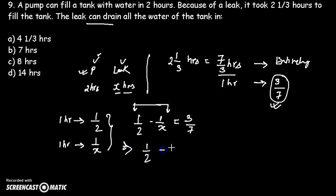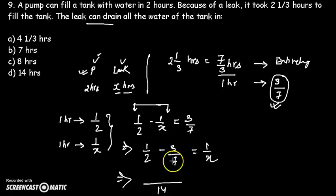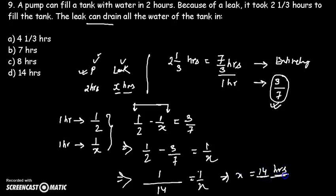So: 1/2 minus 3/7 equals 1/X. This gives 1/14, so X equals 14. That means 14 hours is the time taken by the leak to drain all the water of the tank completely. Option D.